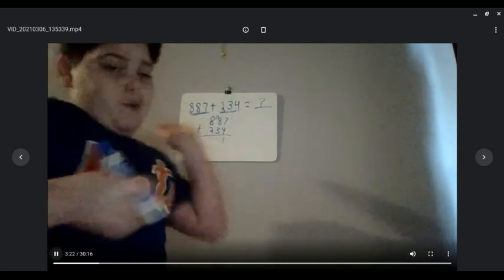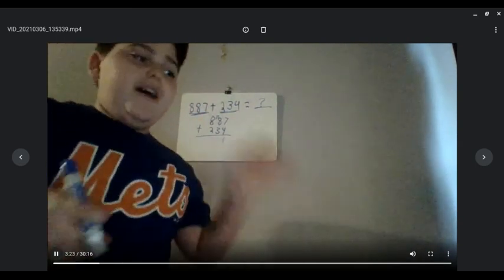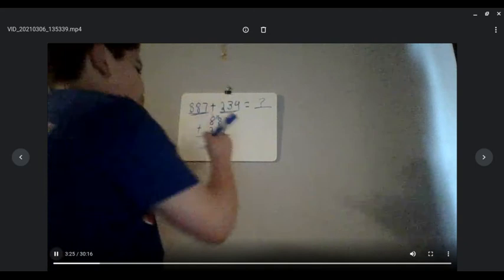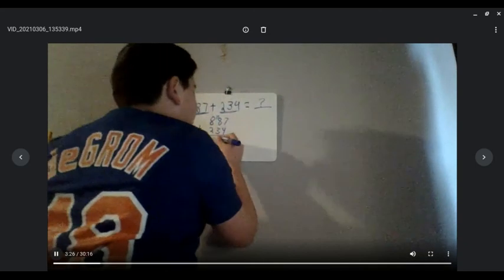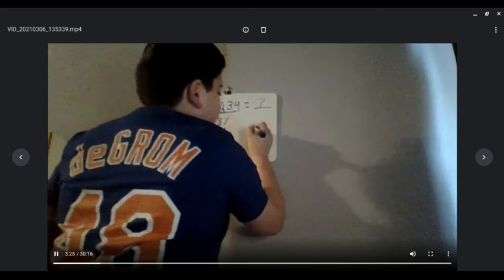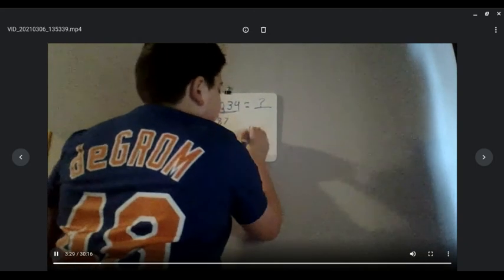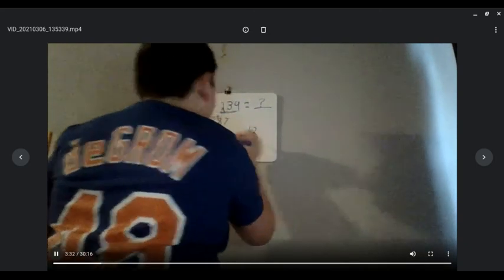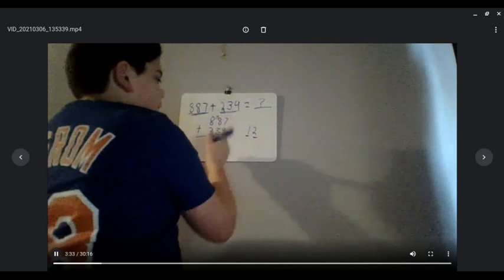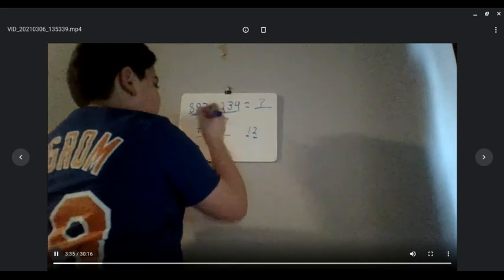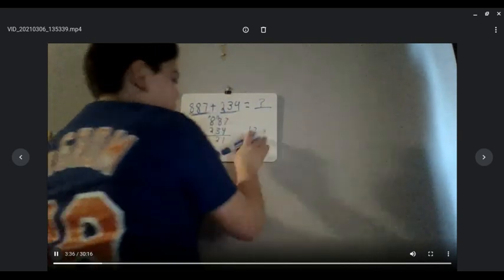And then remember you have to plus that 1, which will bring you 12. So you'll put the 2 here, and same as the 11, there are two digits, so the 2 goes down here, and then you have to bring up the 1 again.